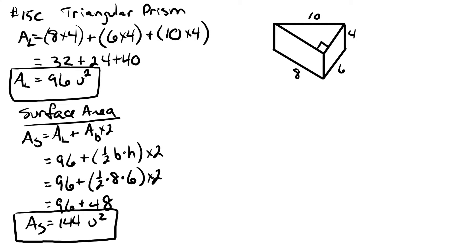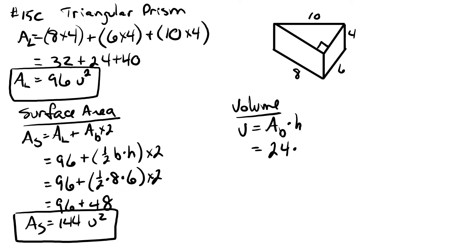Finally, the volume. Volume equals the area of the base times the height. The area of the base came out to twenty four. So the volume is twenty four times the height of four, which gives us ninety six units cubed.